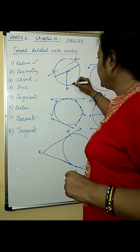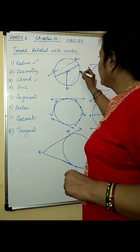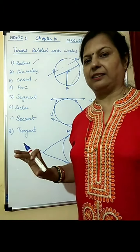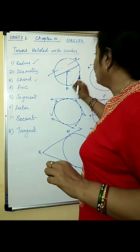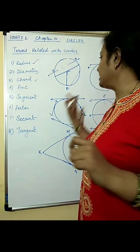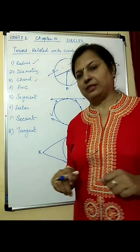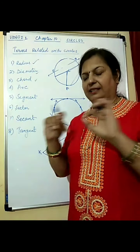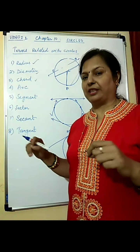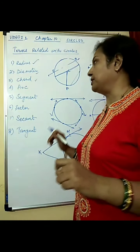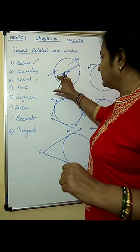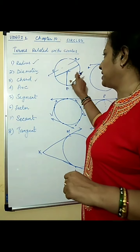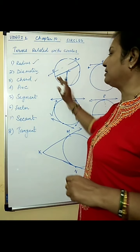Chord is any line inside the circle whose endpoints lie at the circumference of the circle. A chord is a line segment which lies inside the circle and whose endpoints lie on the circumference. The diameter is called the longest chord of the circle because it passes through the centre and has the longest length.